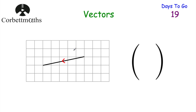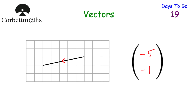Here's one for you to do — can you write this vector as a column vector? This vector is going 1, 2, 3, 4, 5 squares to the left, so that would be negative 5. And then it's going 1 square down, so that would be negative 1. So represented as a column vector it would be negative 5, negative 1. Well done if you got that.